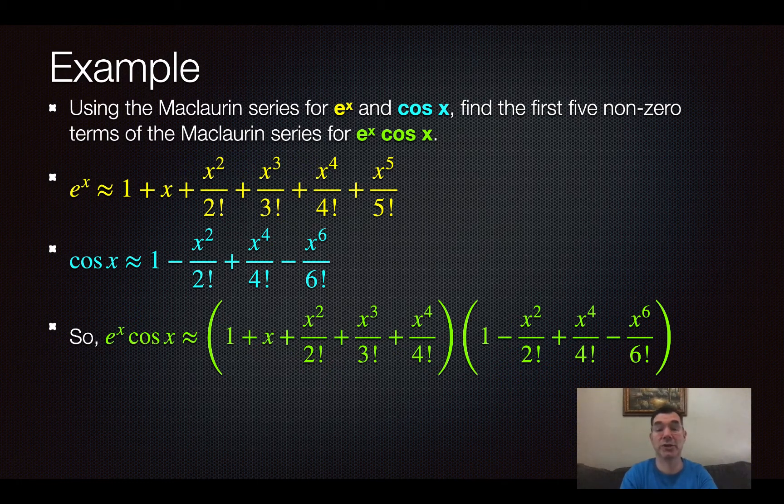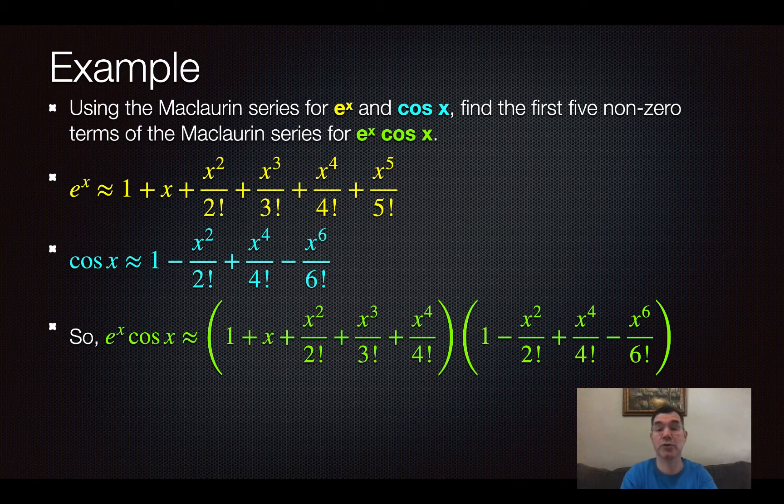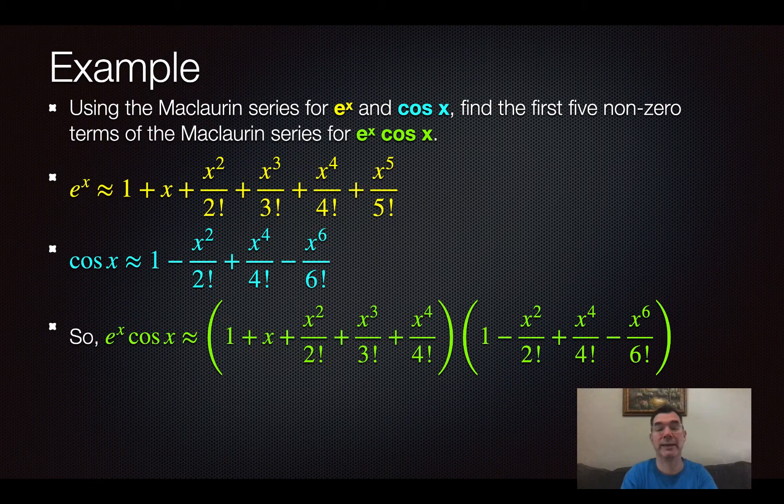So in order to use distributive property on all of this, I would have to do 20 multiplications. Now you can write them out in a big long row, and that's fine.